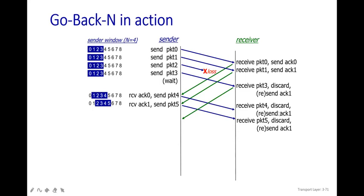Meanwhile, because packet two was never received, packets three, four, and five at the receiver are all discarded — they cannot be acknowledged out of order. Each time these packets arrive, the receiver resends acknowledgement one, because that is the last in-order acknowledgement. The sender therefore receives duplicate acknowledgement ones multiple times.